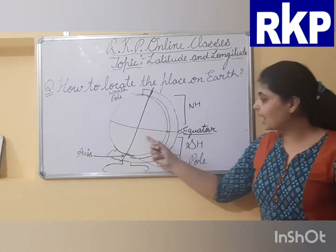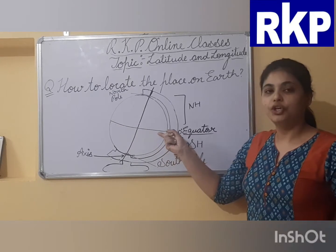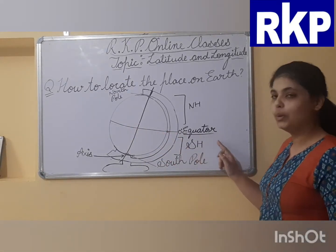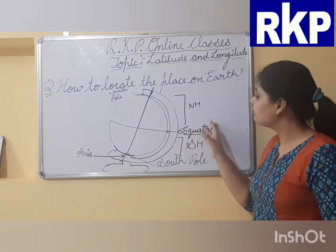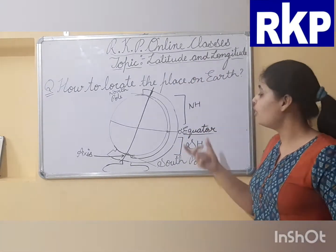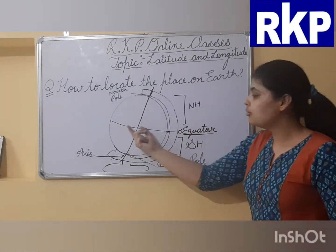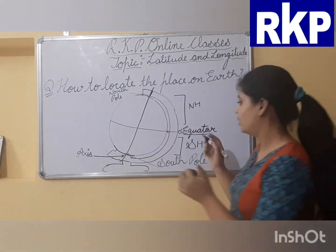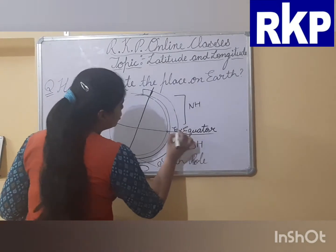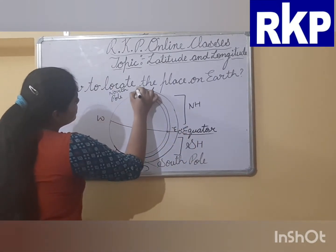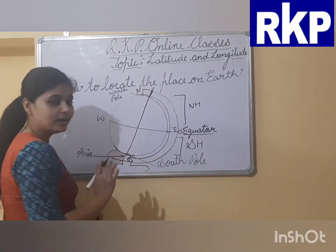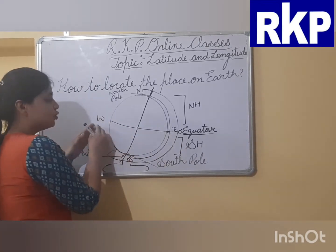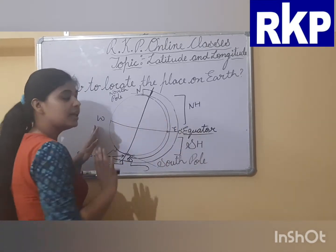And here you can see one more line in the middle of the globe. This line is known as the equator — zero degree equator. This is also a latitude line. Any imaginary line that runs from east to west direction — this is east direction, this is west direction, this is north, this is south, these are cardinal directions — any imaginary line that runs from east to west is the equator.